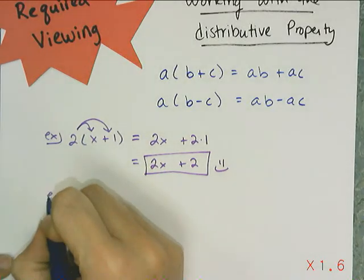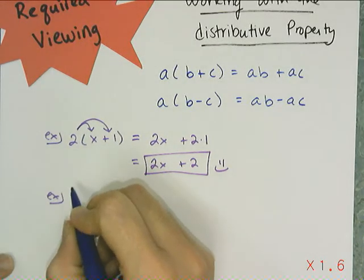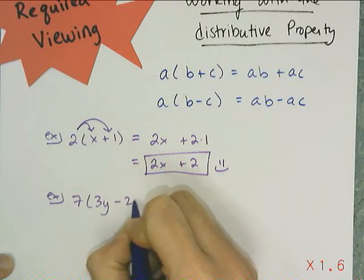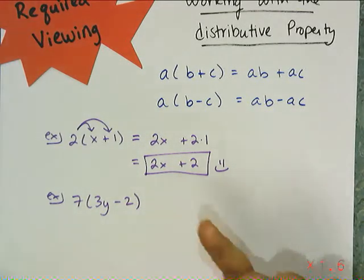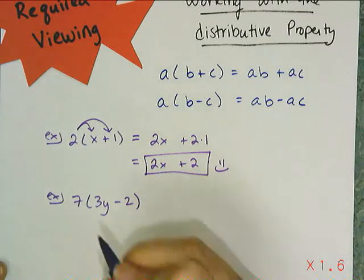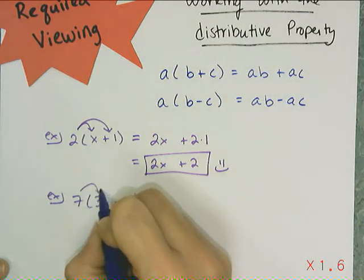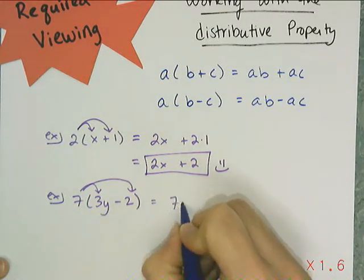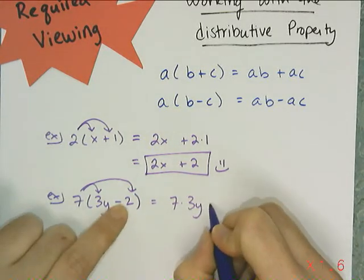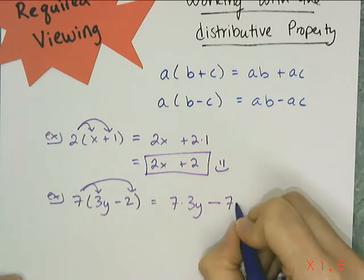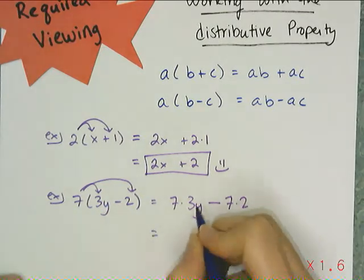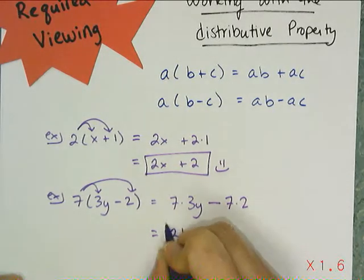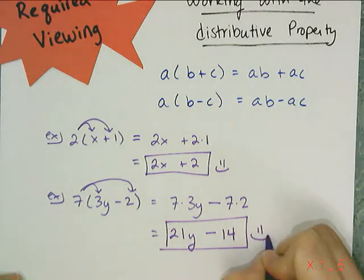Let's look at something a little more fancy — still basic level, but using a subtraction now. Same thing: I'm going to multiply 7 times 3y, and 7 times 2. But there's a subtraction there, so when I multiply 7 times 3y, I carry the subtraction over, then do 7 times 2. So 7 times 3y gives me 21y, minus 7 times 2, which is 14.